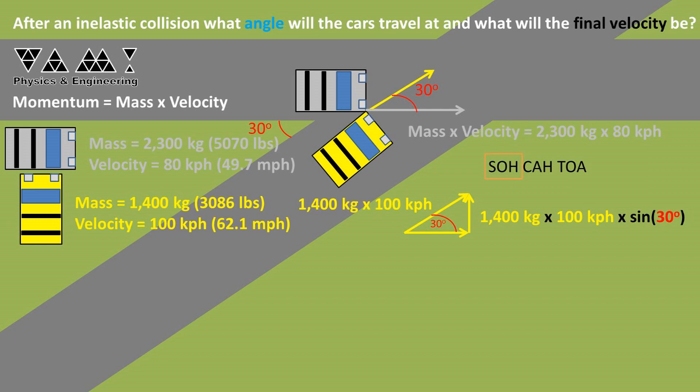So rearranging, we get that the sine of the angle times the hypotenuse, which the hypotenuse will be the mass times the velocity of the yellow car, is equal to the y-momentum vector when we break it down. The y-momentum vector is the up and down vector.